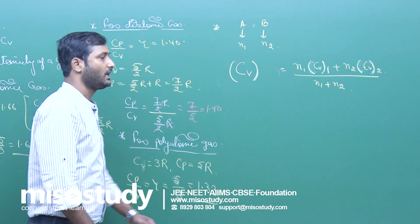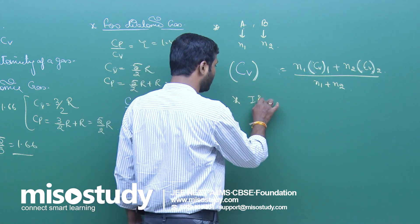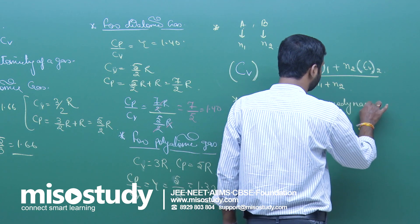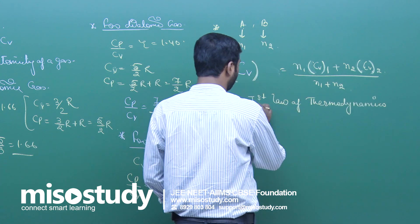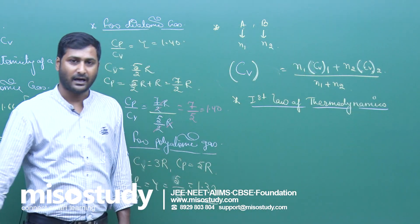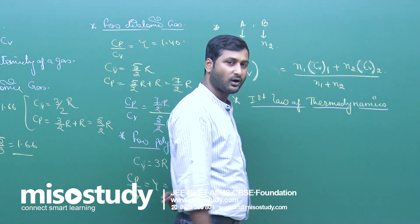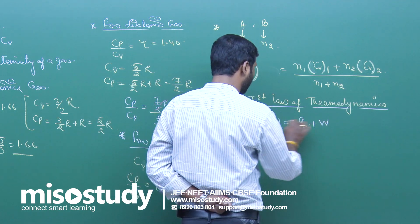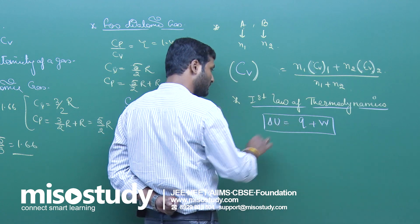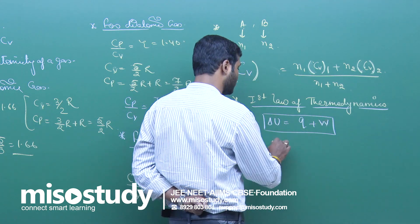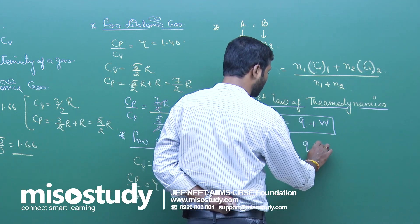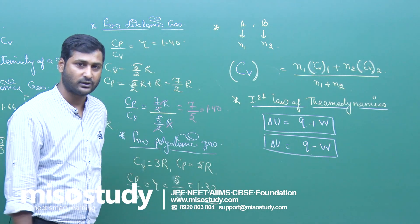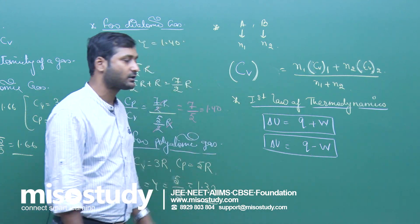The next topic is the first law of thermodynamics. According to this law, energy can neither be created nor destroyed. The mathematical expression is delta U equals q plus w. If heat is given to the system and work is done by the system, then delta U equals q minus w.